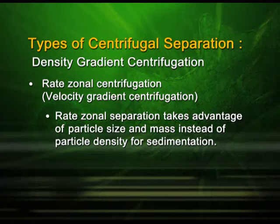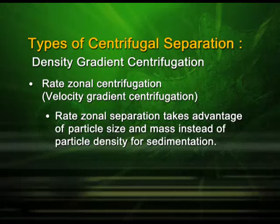In rate zonal centrifugation, the solution to be separated is kept on the top of the tube and subjected to centrifugation. The separation happens only on the basis of mass or size of the particle, not density. You have the layer of mixture — your sample — on top of the sucrose concentration gradient. When subjected to centrifugation, the sample gets separated into different bands according to the size or mass of the particle.